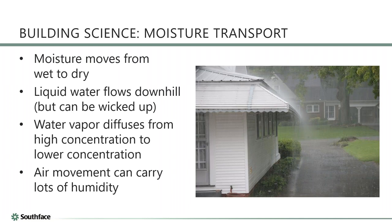Today's topic — moisture — follows similar high-level concepts. Moisture wants to move from wet to dry. Liquid water goes downhill but can also be wicked upward. Water vapor moves by molecular diffusion, traveling from high vapor pressure to low vapor pressure, permeating through permeable materials. Water vapor can also travel via air leakage — humid air leaking in or out carries a large amount of moisture. Those are the big four.